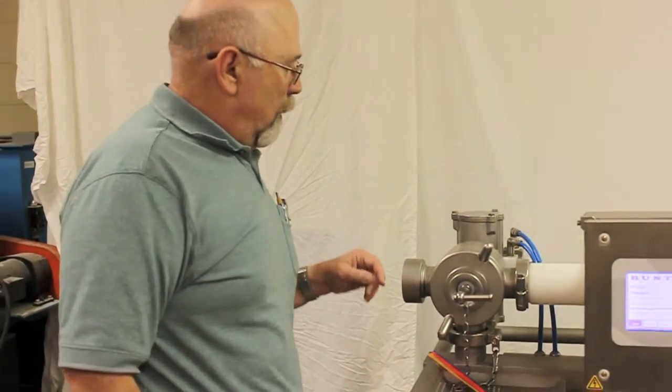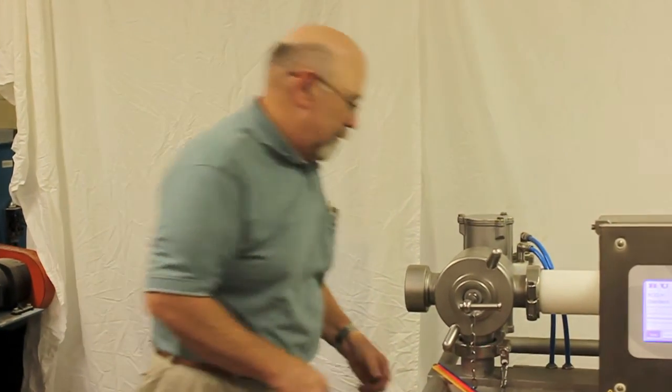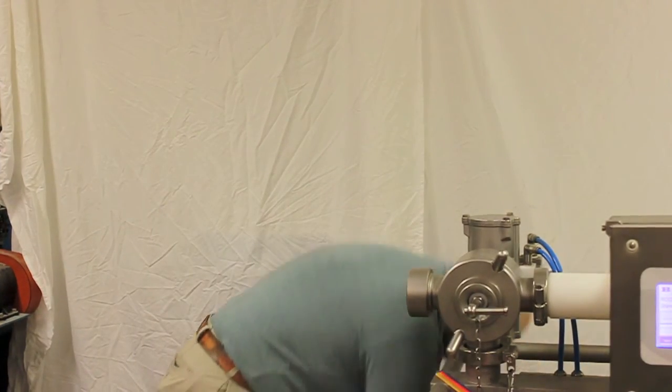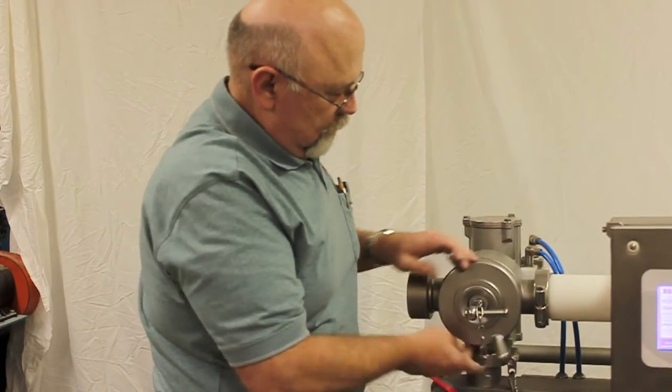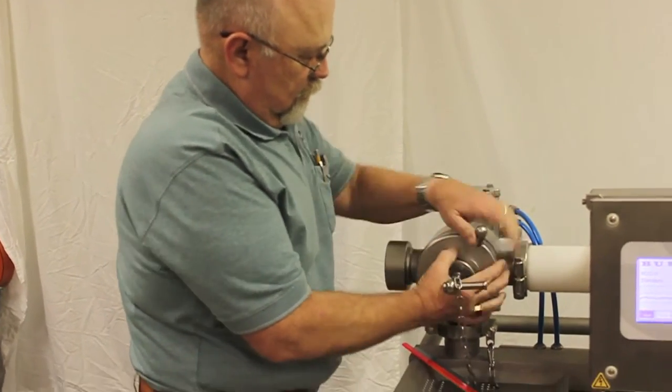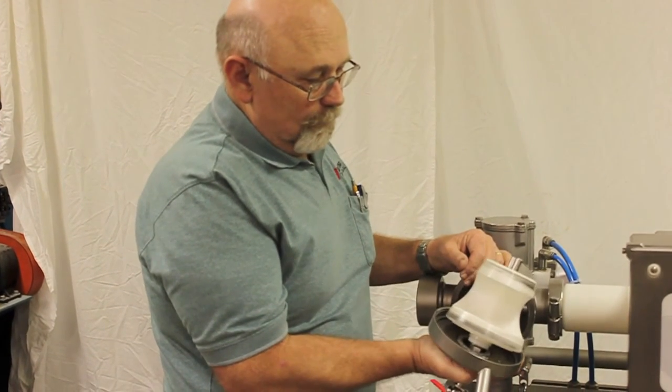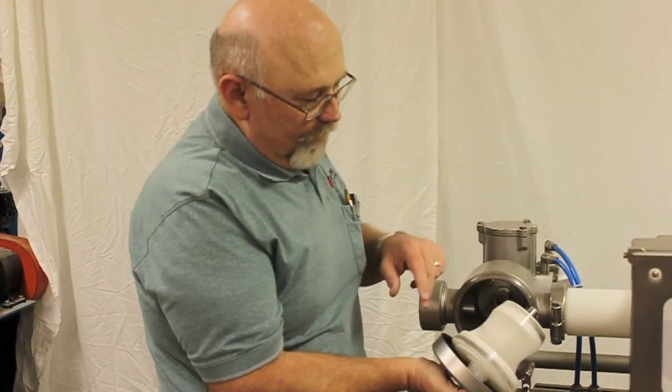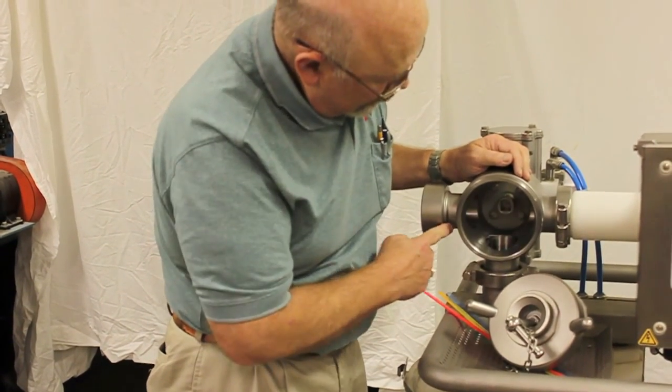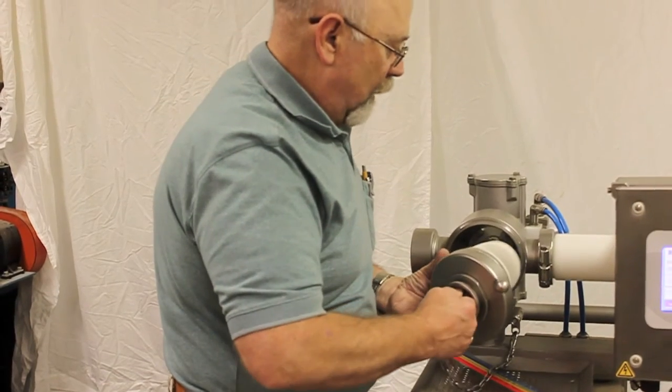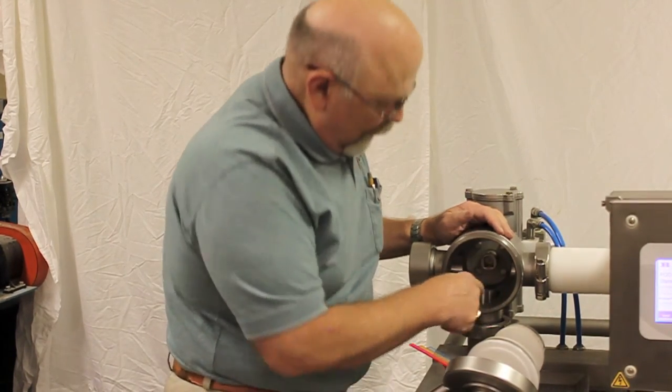So we're going to take this unit apart. First thing we're going to do to be safe is we're going to release the air. So our air is released, and now we're going to open up this housing right here. And as you can see, it's very easy to take that housing apart. This is your diverter valve here. This is the housing on the inside. You can see where the good material will come right through here. And then as this diverter valve changes position, it will divert the contaminated material right through this port here and down into the waste bucket.